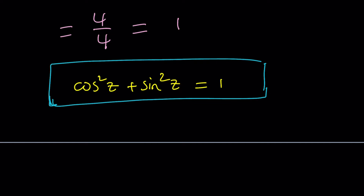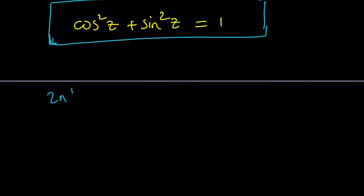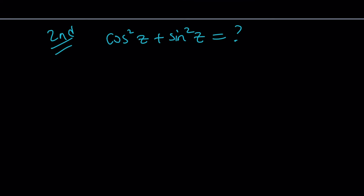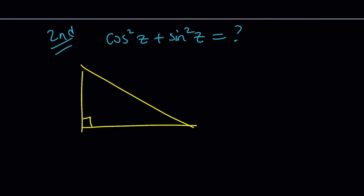So the answer is 1. How could we approach this problem a little differently? If you draw a right triangle with angle z and name the side lengths a, b, and c, by the Pythagorean theorem a² + b² = c². This is a very old theorem with hundreds of proofs. If you write cosine of z as adjacent over hypotenuse and sine of z as opposite over hypotenuse, and then square them and add them, you get b²/c² + a²/c².